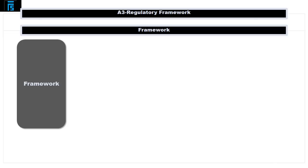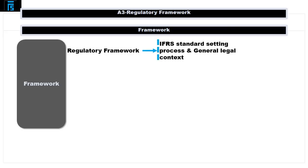In the context of financial reporting, the term 'framework' can be used in two different ways. On the one hand, it may describe the institutional setup in which international financial reporting standards are prepared, approved, and applied. This is the so-called regulatory or institutional framework, which embraces the IFRS standard-setting process and the general legal context in which IFRS standards are used.